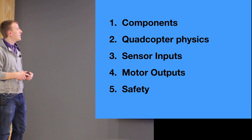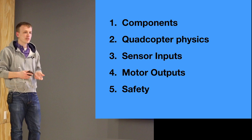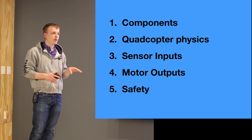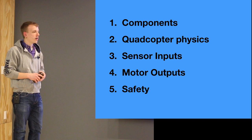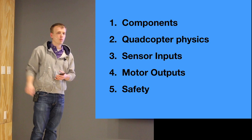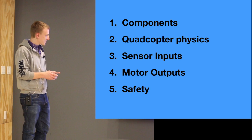Let me give a quick overview of my talk. First, I'm going to give a rundown of the basic components of the quadcopter. After that, I'll give an overview of some of the physics behind how it works — how it maneuvers. Then I'll discuss how we take raw sensor inputs and manipulate them into usable data to control the quadcopter. After that, I'll talk about how we convert those sensor inputs to four numbers — a speed for each of the four motors, the motor outputs. And finally, I'll talk about safety, because when you're working on a project like this, it's very important.